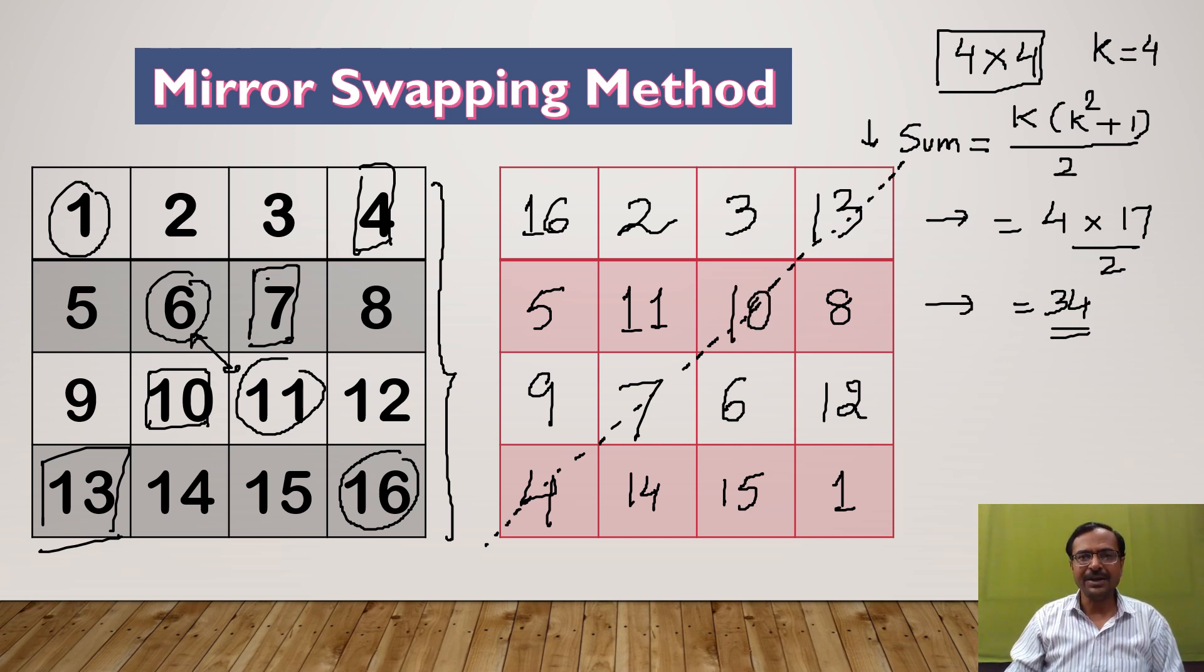Now friends, that's it, we have completed our magic square. Can you just check what is the sum of all the numbers along this row? 16 plus 2 is 18, 18 and 3 is 21, plus 13 is 34. The same number which I got through the formula. Check all the rows, check all the columns, check all the diagonals. You are going to get 34.